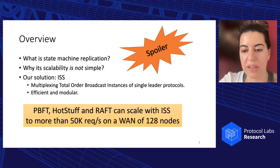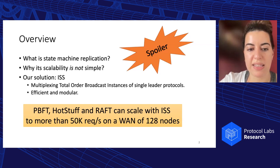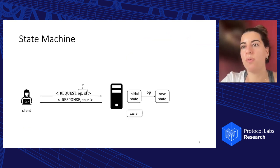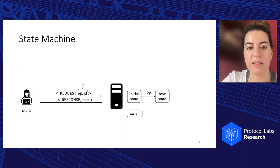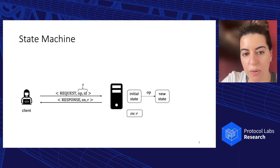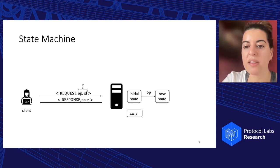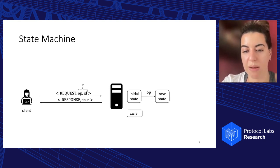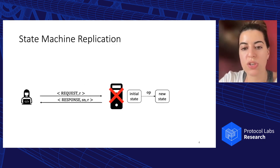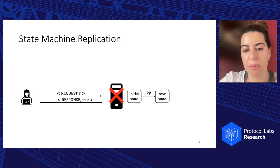Before jumping into many details, let's take a step back and look at the problem we try to solve in more detail. State machine replication starts with a simple state machine. Let's say a client wants to submit a request to some remote service. Such a request has a payload and some identifier. The payload is the operation that will be executed by the service to go from an initial state to some new state. Once done, the service responds to the client by assigning a sequence number to the response. This is a very simple solution, however it has an important drawback — it has a single point of failure.